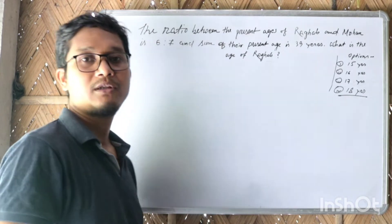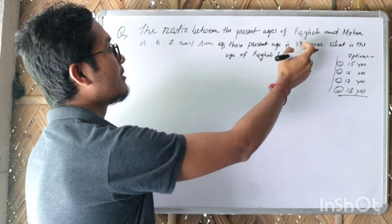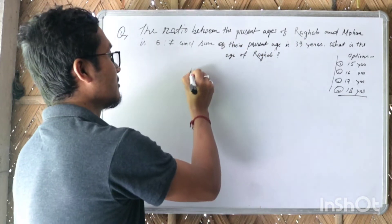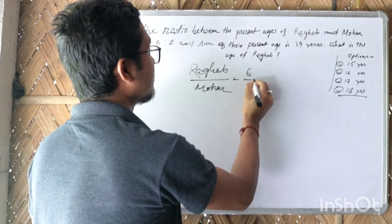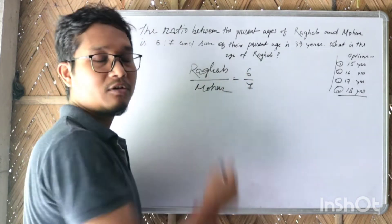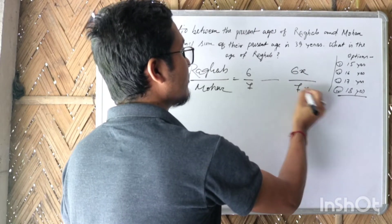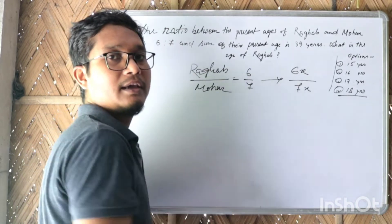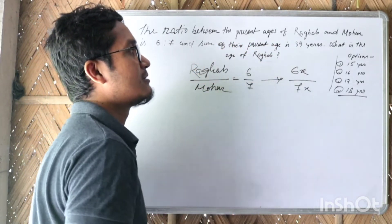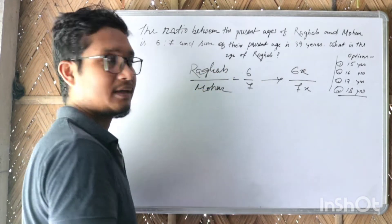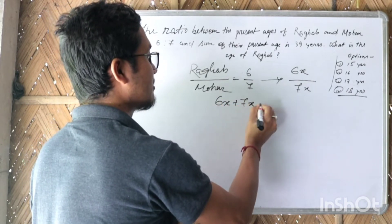I am going to discuss this question as it appears in competitive exams. We let the ages be represented by x. So we have 6x plus 7x equals 39.